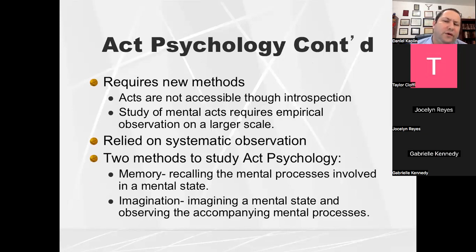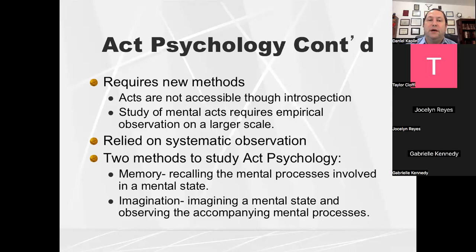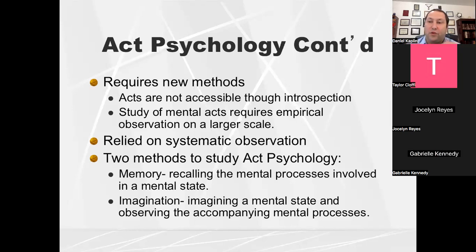To do ACT psychology, you're going to need different approaches. You're not going to be able to use introspection and the experimentation that Wundt used. Rather, you're going to need to use strategic observation strategies. A couple of the observation strategies Brentano used were memory and imagination — focusing on the process of remembering and imagining, and describing your experience as you're doing so.